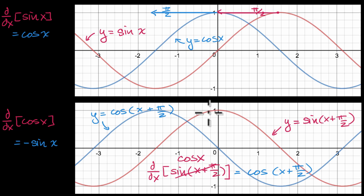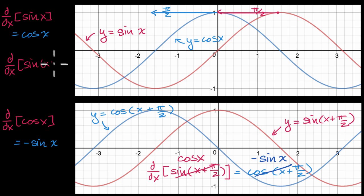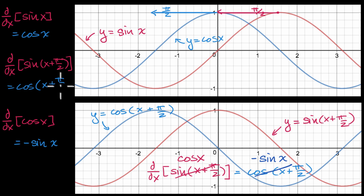You can see this red graph is the same thing as cosine of x — we know that from our trig identities, and you can also see it graphically. And what is cosine of x plus pi over two? Well, from our trig identities, we know that is the exact same thing as negative sine of x. So the derivative with respect to x of sine of x plus pi over two equals cosine of x plus pi over two, which is the same as saying the derivative of cosine of x is negative sine of x.